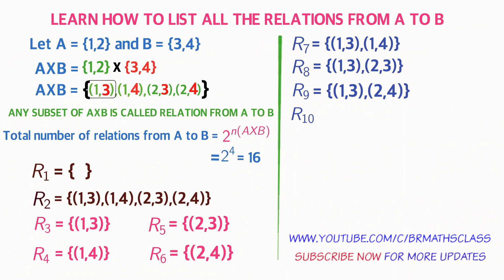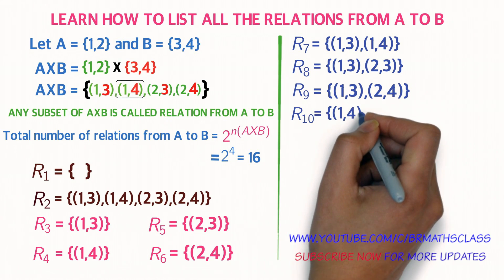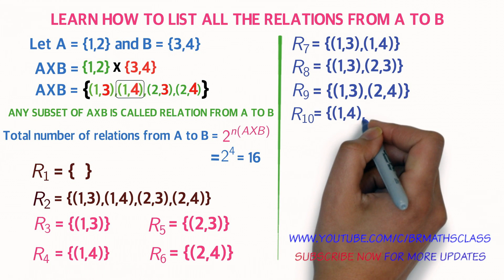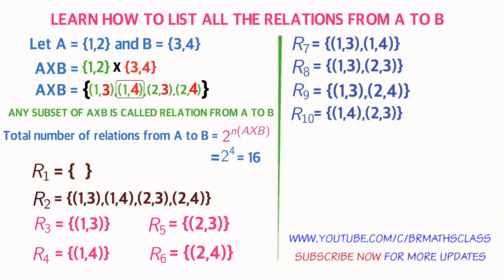R10, the tenth relation: I am taking the second element from A cross B, which is ordered pair (1,4). Moving to the right, the next immediate element after (1,4) is ordered pair (2,3). So R10 is the set containing ordered pair (1,4) and ordered pair (2,3).